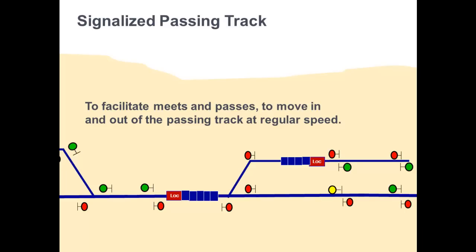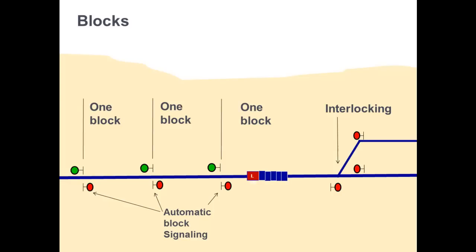So how would you compare unsignaled sidings to signalized passing tracks? Signaled passing tracks, without a doubt, add to the capacity of the main line. A fully signaled track is an auxiliary to the main line. It facilitates meets and passes because the signals will allow movement in and out of the passing track at the speeds associated with the turnout sizes, not restricted speed. So signaled passing tracks are capacity builders. Yes, sir.